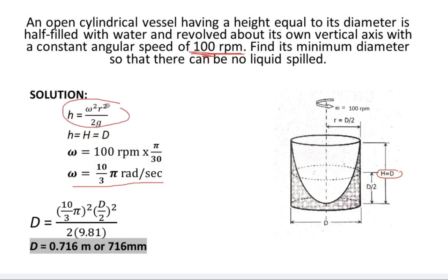The given formula: ω² times the radius, which is D/2, squared, over 2 times the gravity, that is 9.81. So we have the final answer: D = 0.716 meters or 716 millimeters.